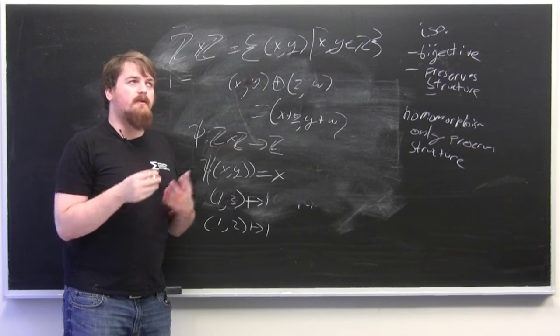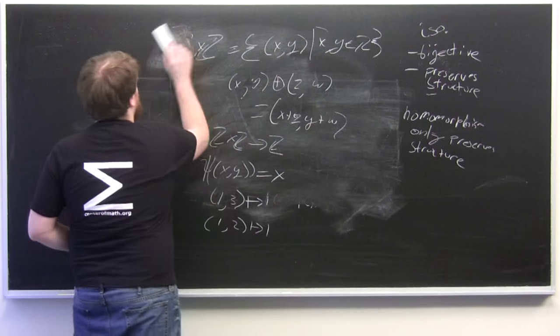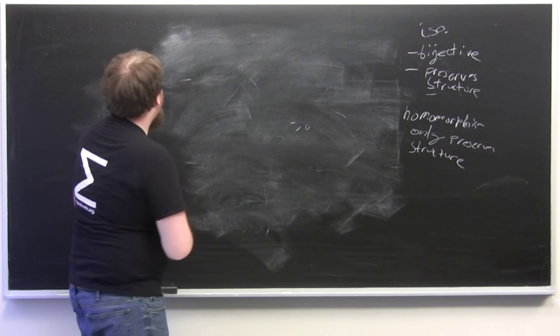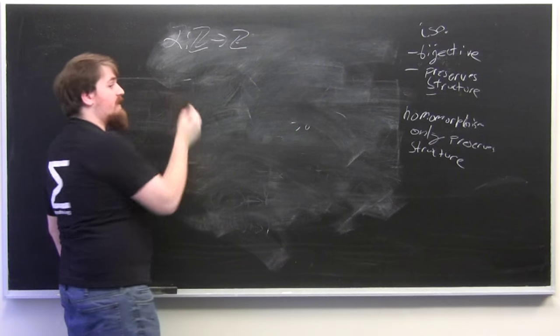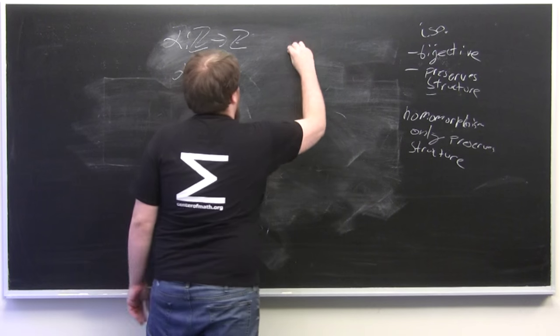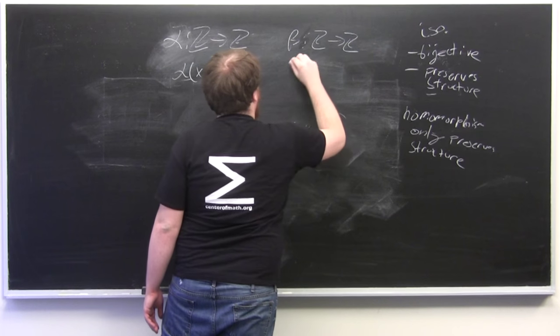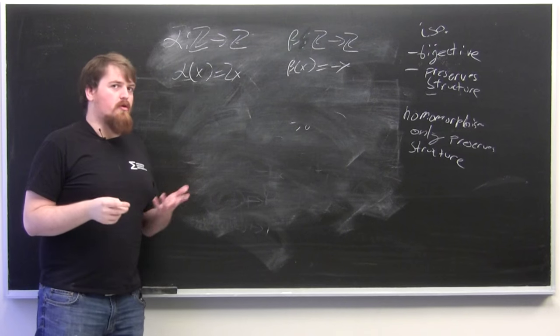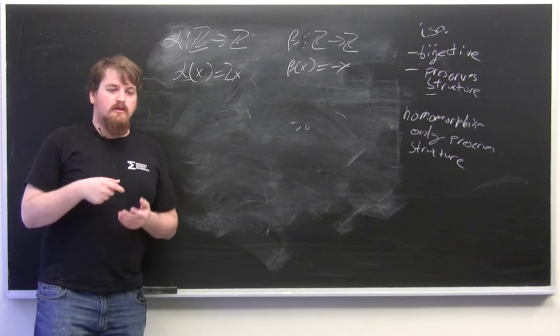So another interesting set of homomorphisms is homomorphisms which send one group to itself. So if we have alpha sending from Z to Z where alpha of x equals 2x and we have beta. These are both homomorphisms. I won't go through it but it's basically just because multiplication distributes over addition so you can work that out for yourself.